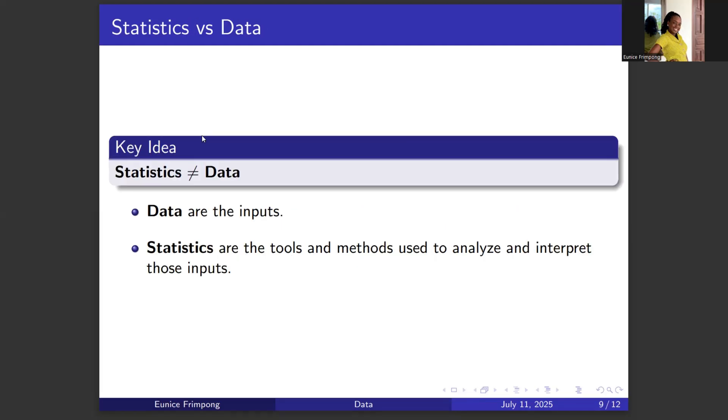Let's do a comparison of statistics versus data. Take note that statistics is not equal to data. Data are the inputs, the material or the raw material that you have. And statistics are the tools and methods that are used to analyze and interpret those inputs. If you consider the ages of students in the class, the ages of students in the class is data. If you want to find the average age of students in the class, the average age is a statistical tool because you are using it to analyze and interpret your data. By finding the average age, you have been able to interpret the data using some form of statistical tool.